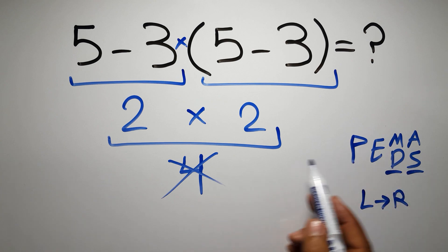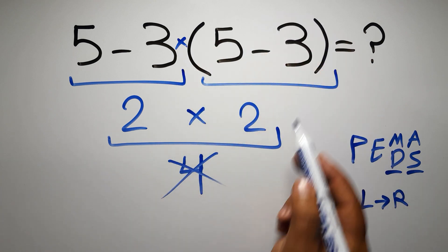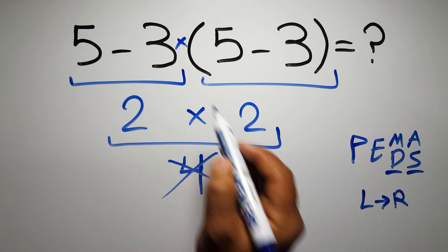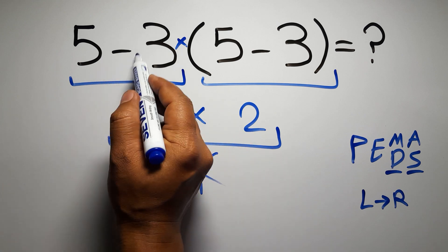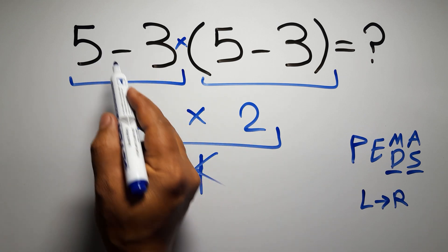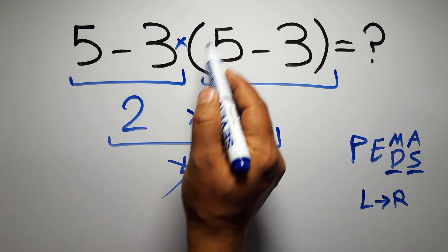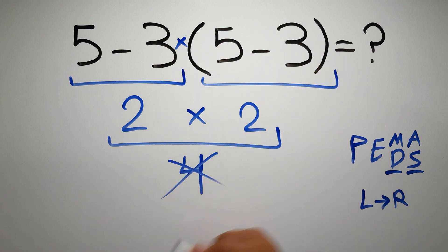So therefore, according to the PEMDAS, first we have to do these parentheses, then this multiplication, and finally this subtraction. If we do this subtraction before this multiplication or these parentheses, it is wrong.